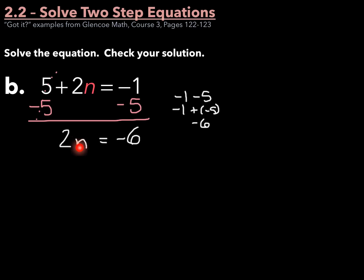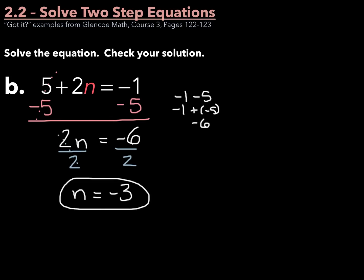Negative 1 minus 5 is negative 6. Now I still need to solve for n. This is 2 times n, and the opposite of multiplication is division. So if I divide by 2 on both sides, 2 divided by 2 is 1 and cancels out. n is then going to equal negative 6 divided by 2, which is negative 3. So my solution should be negative 3.